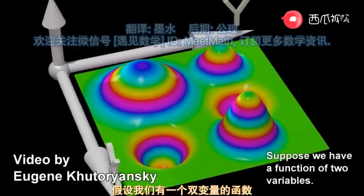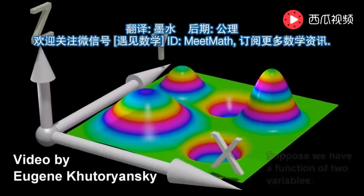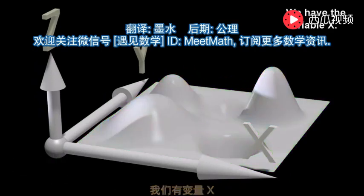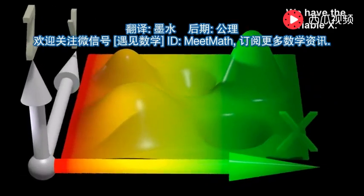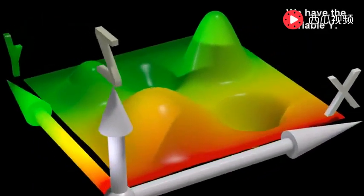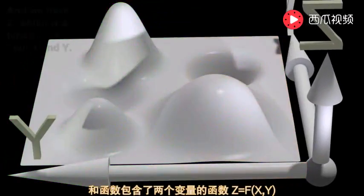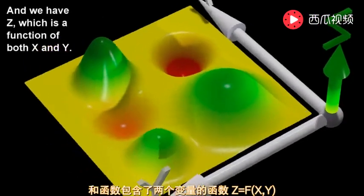Suppose we have a function of two variables. We have the variable x, we have the variable y, and we have z, which is a function of both x and y.